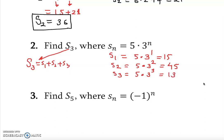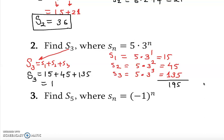And s₃ = 5 × 3³ = 135. Once we have all those, we add them: S₃ = 15 + 45 + 135 = 195. However you want to do it, as long as you get the correct answer, that's fine. This series will also lead us to summation notation, so pay attention to that.